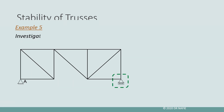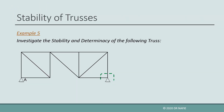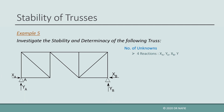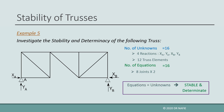To make the truss in example 4 stable, we can simply change the roller support at the right end to a hinged support. The number of reactions will be increased by one, and the number of unknowns will increase to 16 instead of 15. Therefore, the number of equilibrium equations will become equal to the number of unknowns, and the truss will become stable and determinate.